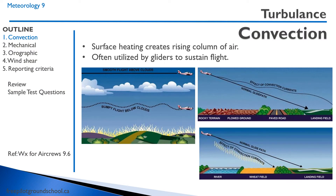Let's begin by discussing some different types of turbulence and causal factors. First off, we can have convection. Surface heating creates a rising column of air, and this rising column of air will create turbulence. Gliders often take advantage of convection — air thermals, they call them — in order to gain altitude for gliding. Below the clouds, you will often end up having considerable turbulence.